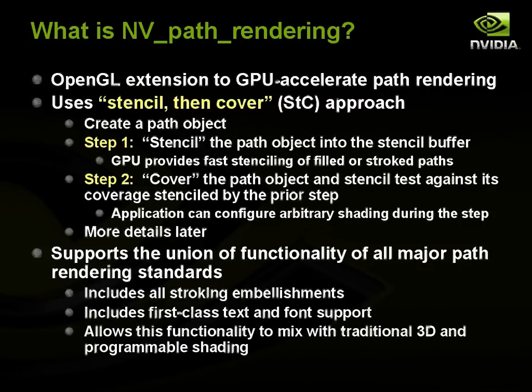NV path rendering is an OpenGL extension that uses an approach called stencil then cover, or STC. To render a path, the first step is to create a path. Step one involves stenciling the path into the stencil buffer — the GPU provides extremely fast stenciling of filled or stroked paths. Step two is to cover the path with conservative geometry that NV path rendering generates for you, where you test against the stencil coverage. At this point, the application can configure arbitrary shading — fixed function, GLSL, Cg, or assembly — it's up to you.